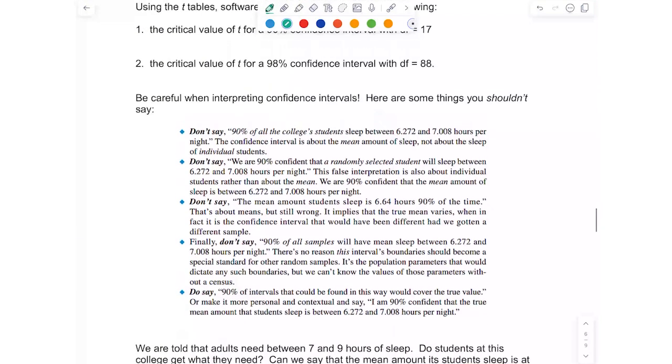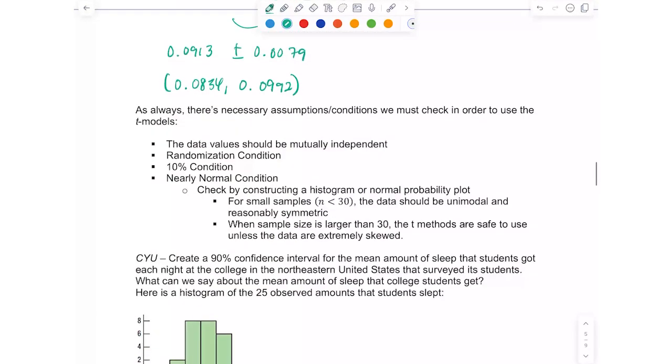Just a couple things to keep in mind for your assumptions and conditions: you obviously always want to check that the data values are mutually independent, the randomization condition always should be something you're paying attention to, you need to check the 10% condition, and the nearly normal condition is new because for proportions we had success failure, but we don't have p-hat or q-hat here.